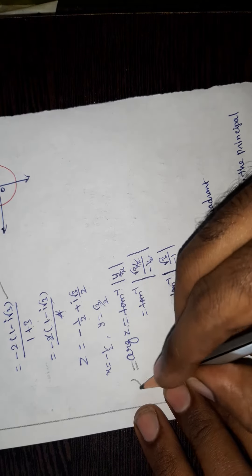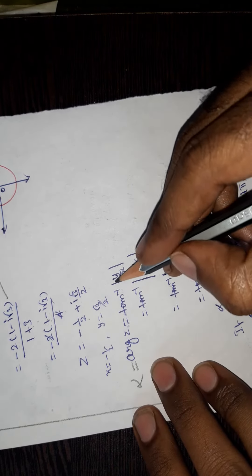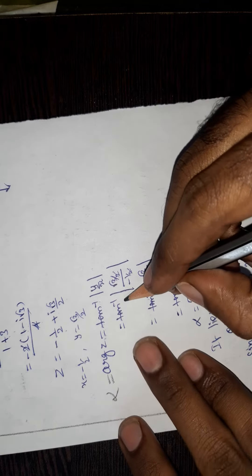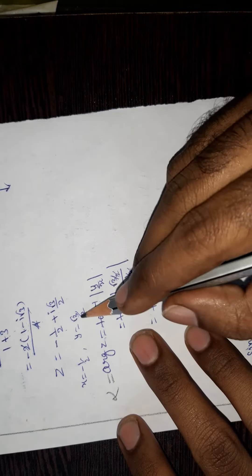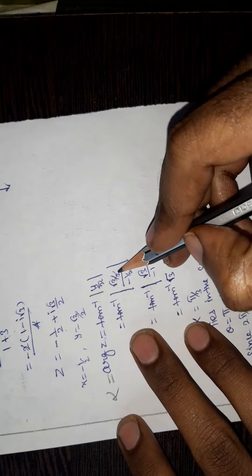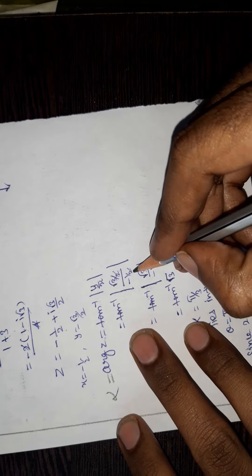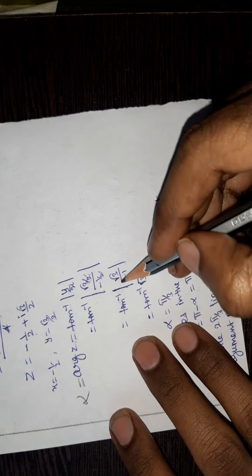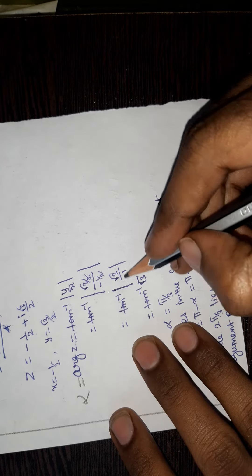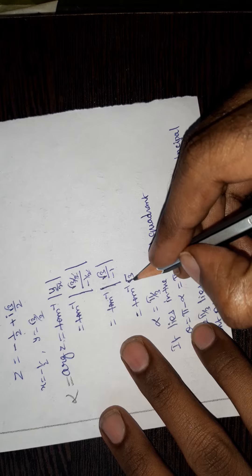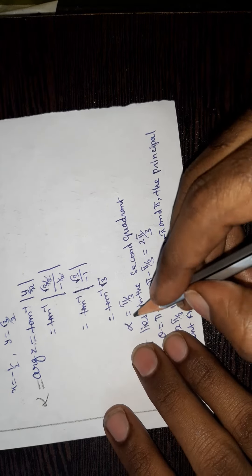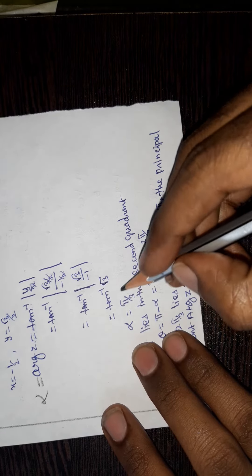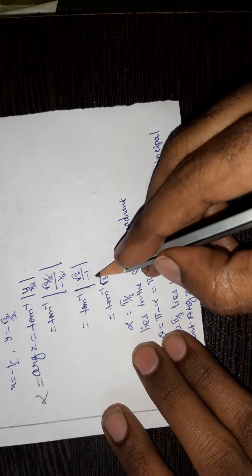The argument of z is tan inverse of y by x, so alpha equals tan inverse of (root 3 by 2) divided by (minus 1 by 2). The 2s cancel, giving tan inverse of root 3, which equals pi by 3, since tan(pi by 3) equals root 3.